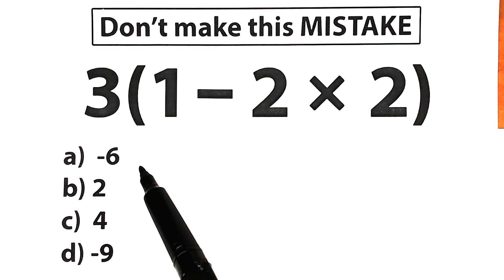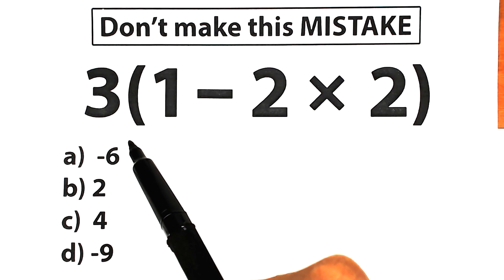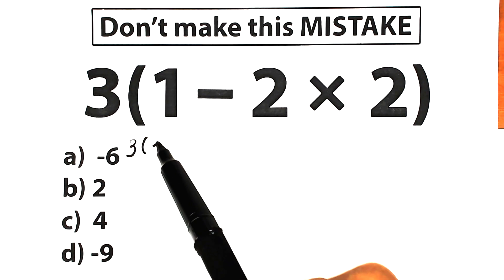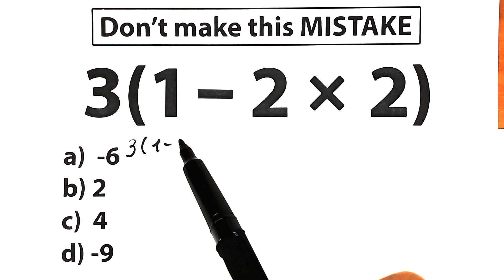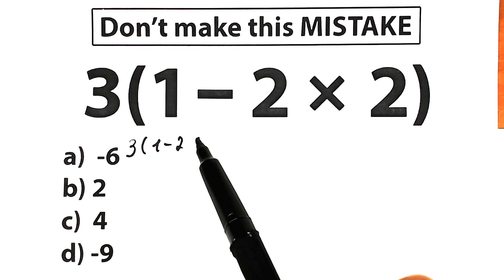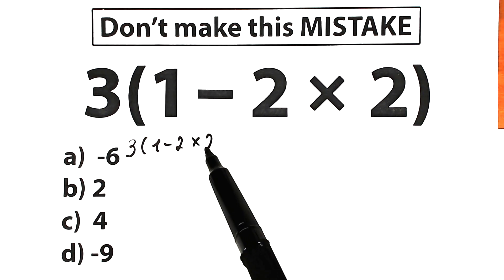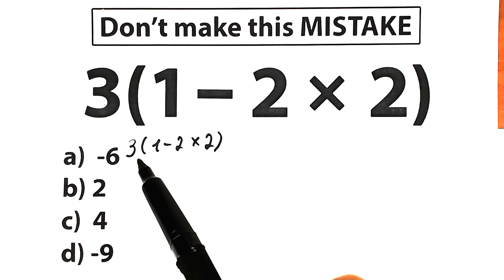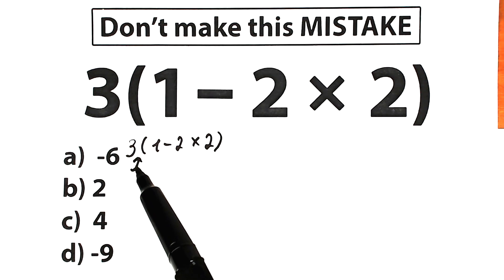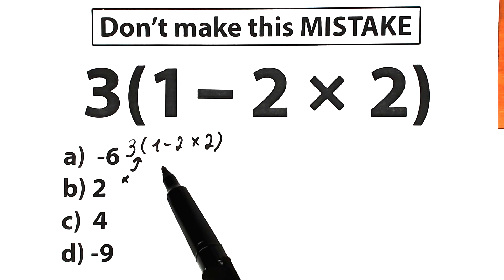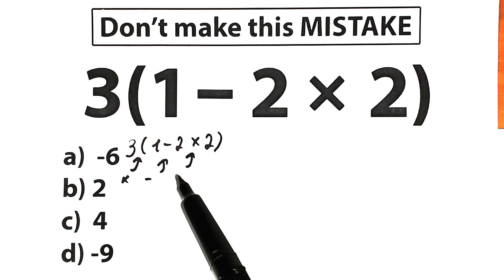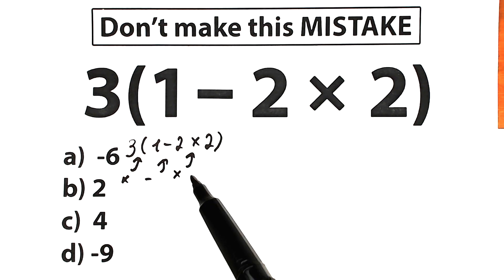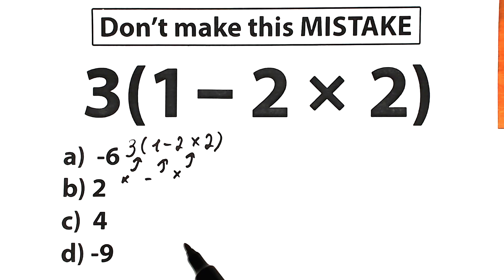So let's solve our challenge. Here is our challenge: we have 3 inside parentheses, we have 1 minus 2 times 2. As you can see, we have multiplication, we have subtraction, we have a lot of math operations.